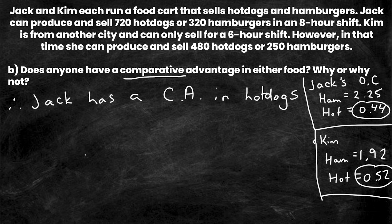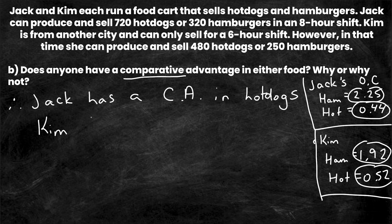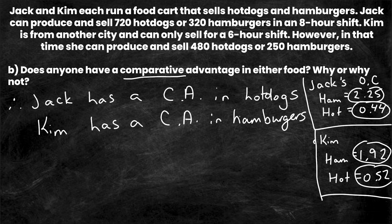Remember, no one person can have a comparative advantage in both goods, which implies Kim must have a comparative advantage in hamburgers. And indeed, Kim's opportunity cost for one hamburger is 1.92 hot dogs, whereas Jack's is 2.25 — Kim's is lower. Therefore Kim has a comparative advantage in hamburgers, because you have a comparative advantage in the good where your opportunity cost is lower.